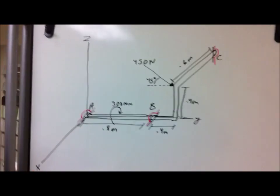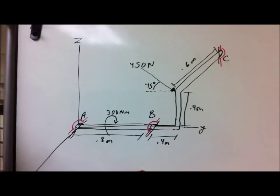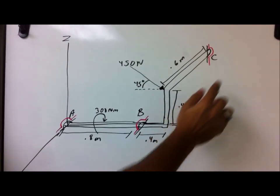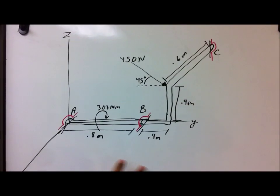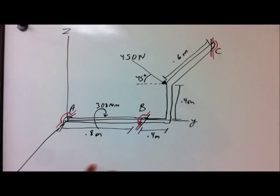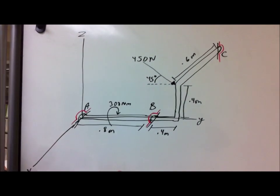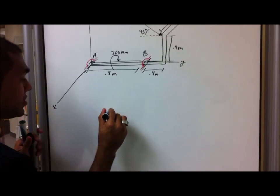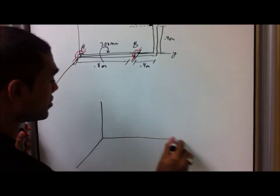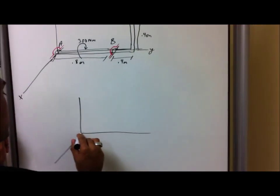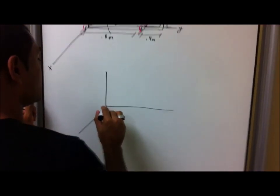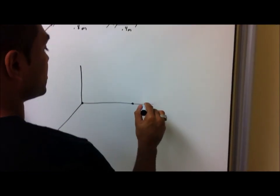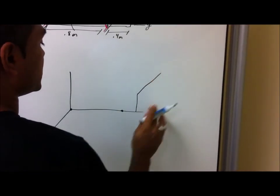Now what we're solving for is both the reaction forces, if any, as well as the moment, if any, and the forces in A, B, and C. Since we have this problem, what I'm going to draw now is the free body diagram. Now let's draw the free body diagram. What it's going to be is some force here, force here, direction up, and like this.